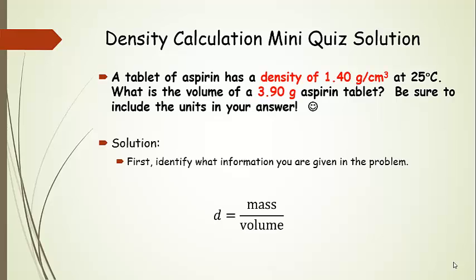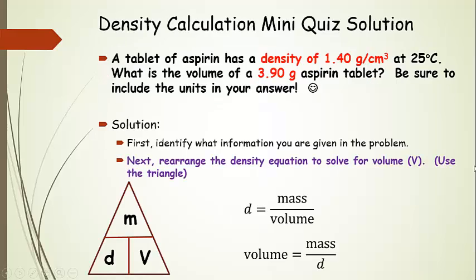So again, we're going to identify the important information. So we have the density, and we have the mass. And we're looking for the volume. Using our triangle, so here we have our volume that we're looking for. We can see that that's mass divided by density. So here's our rearranged equation.